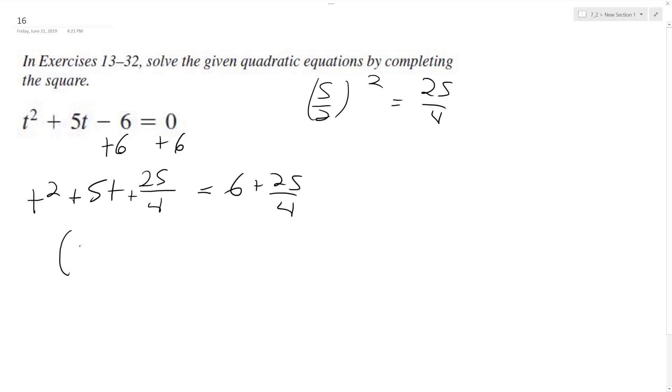So we end up with t plus 5 halves squared equals 24 plus 25, which is 49 over 4. Because 6, when you make it a denominator of 4, becomes 24 over 4.